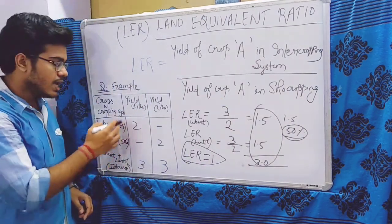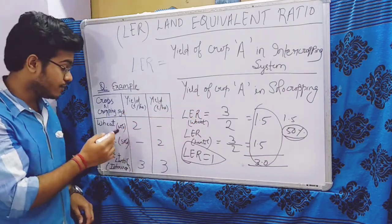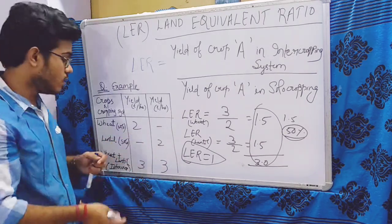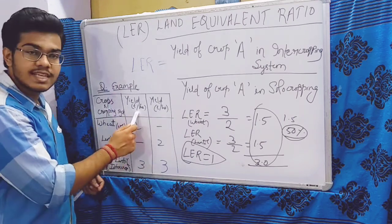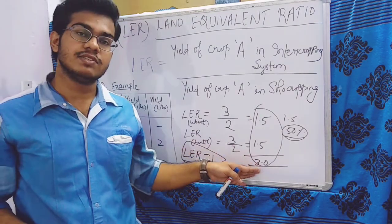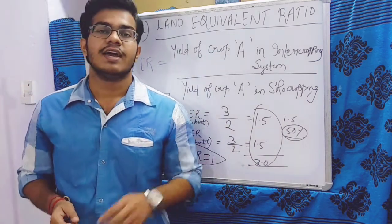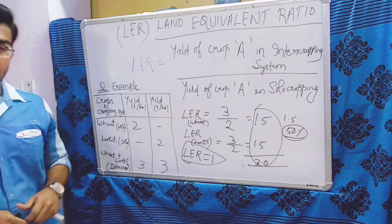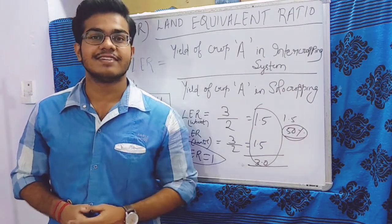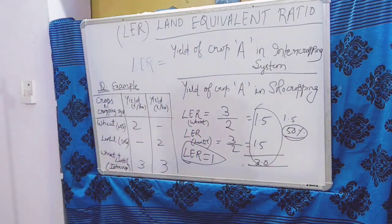When we grow wheat and lentil as sole crops in one hectare we get 2 and 2 tons per hectare respectively. But when we go for wheat plus lentil intercropping on the same one hectare of land, we get 3 and 3 tons of both. This is the efficiency which is more than the efficiency of sole cropping. So this is all about Land Equivalent Ratio and its calculations. Thank you for watching.